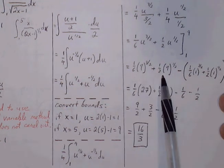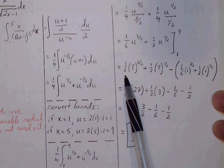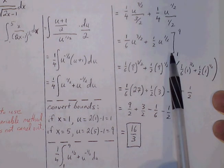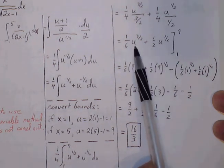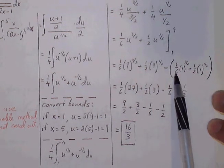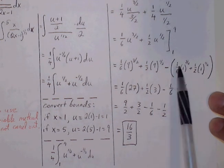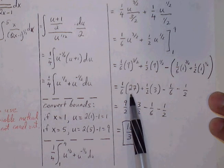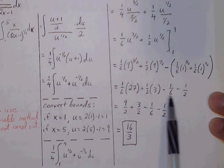This is f of b. Minus, now we plug the lower bound in for every u value that you see. So 1 to the 3 halves over 6 plus 1 to the 1 half over 2.